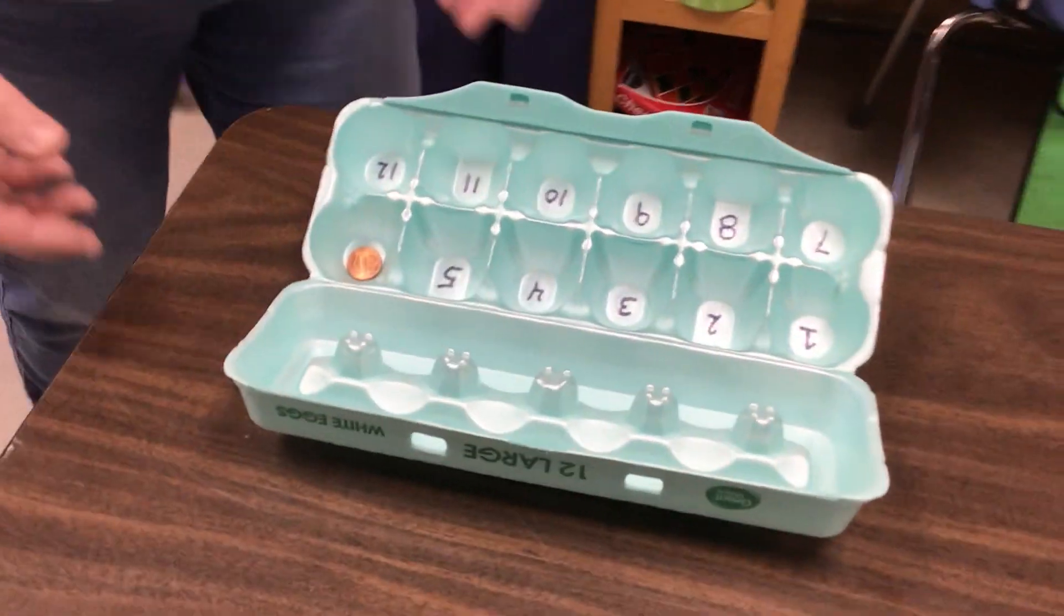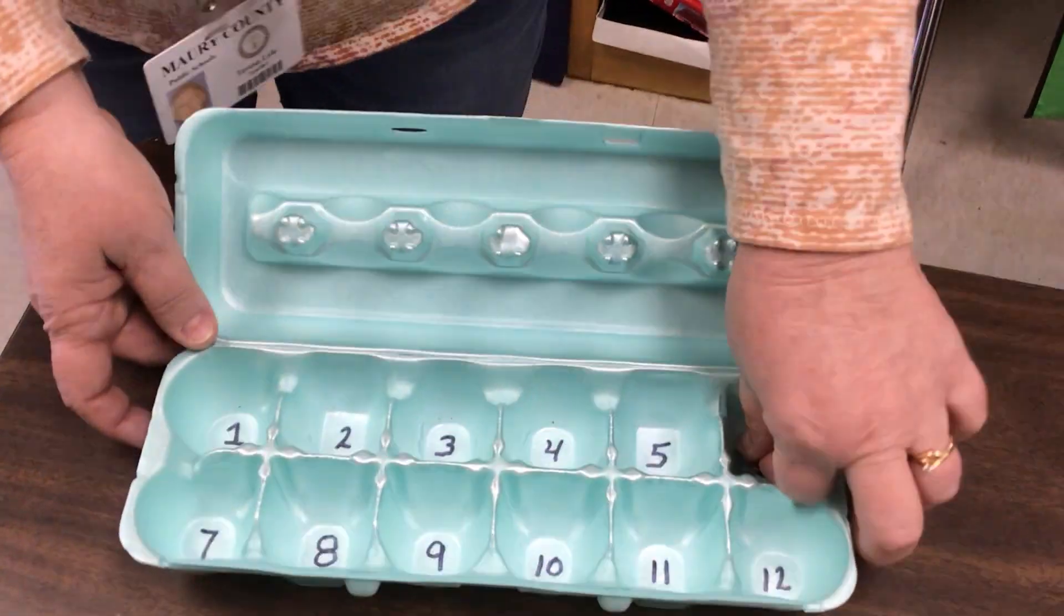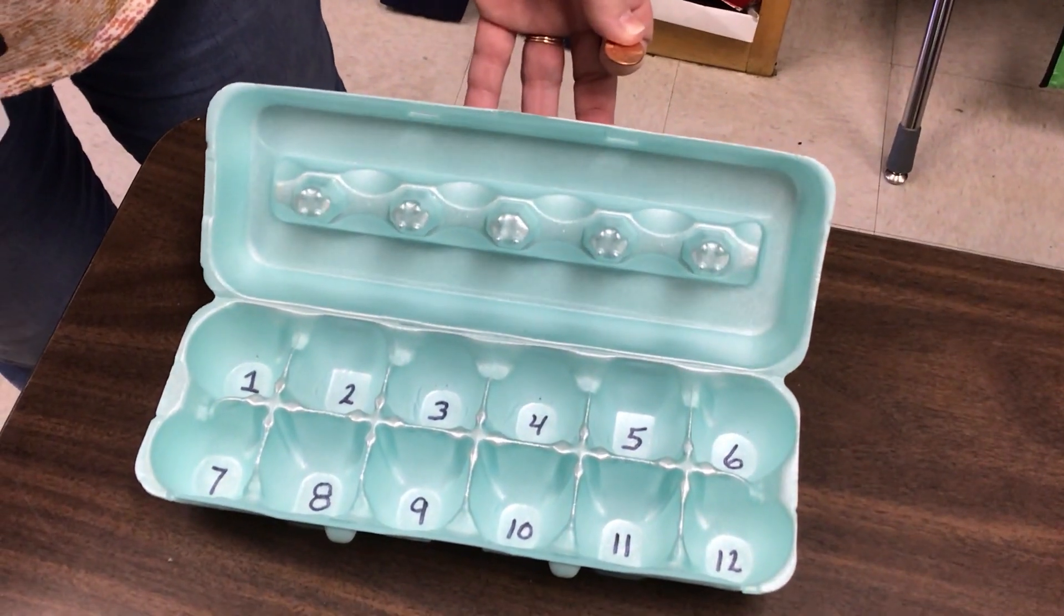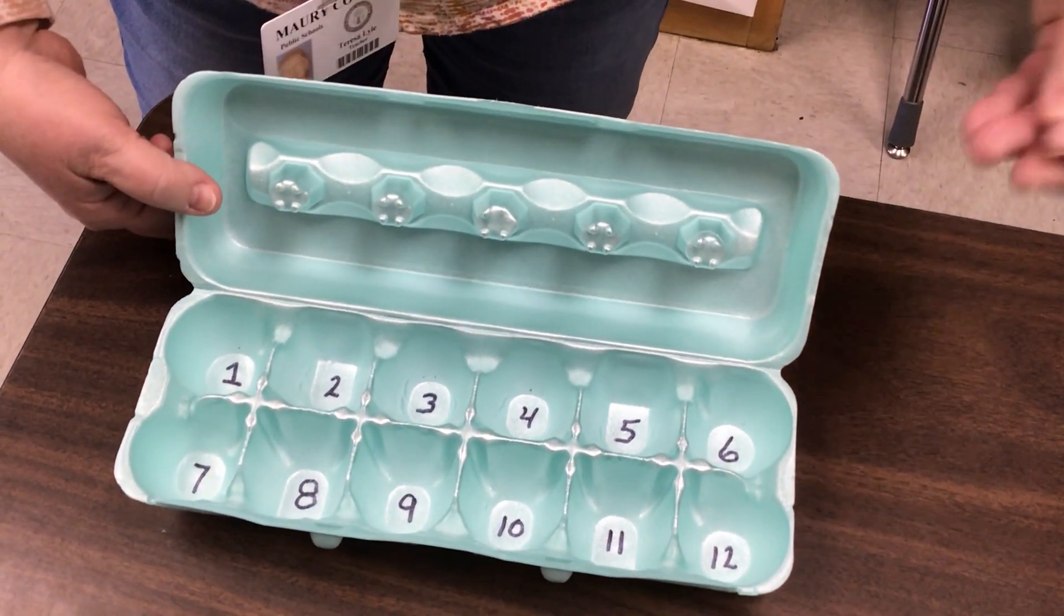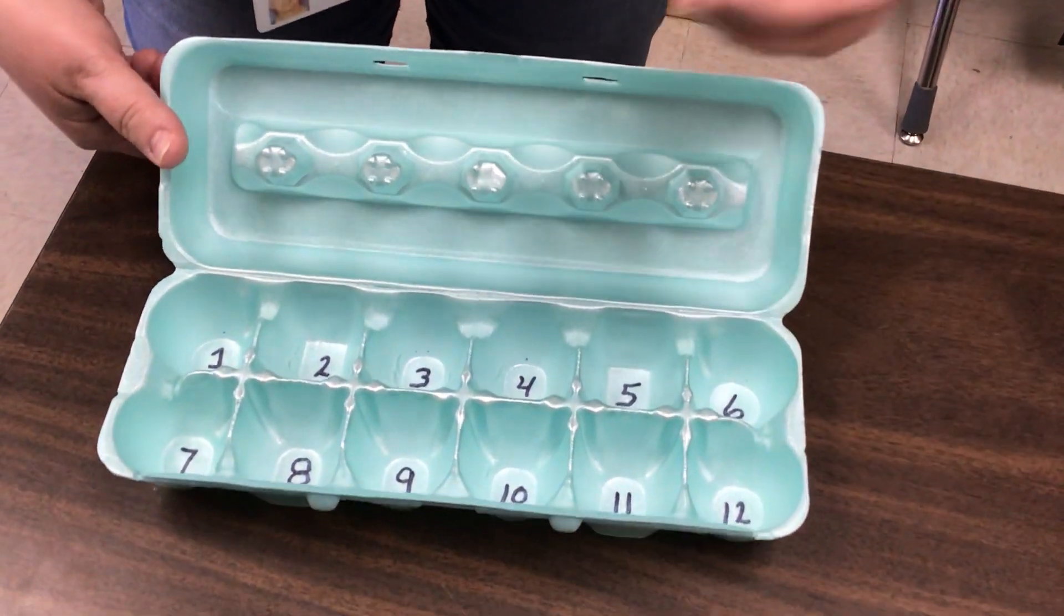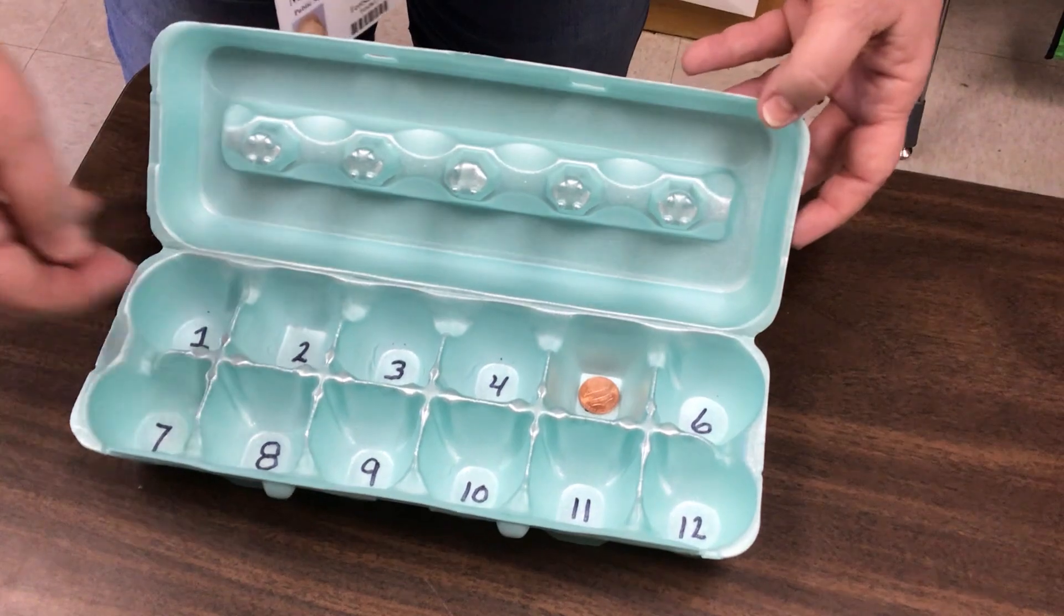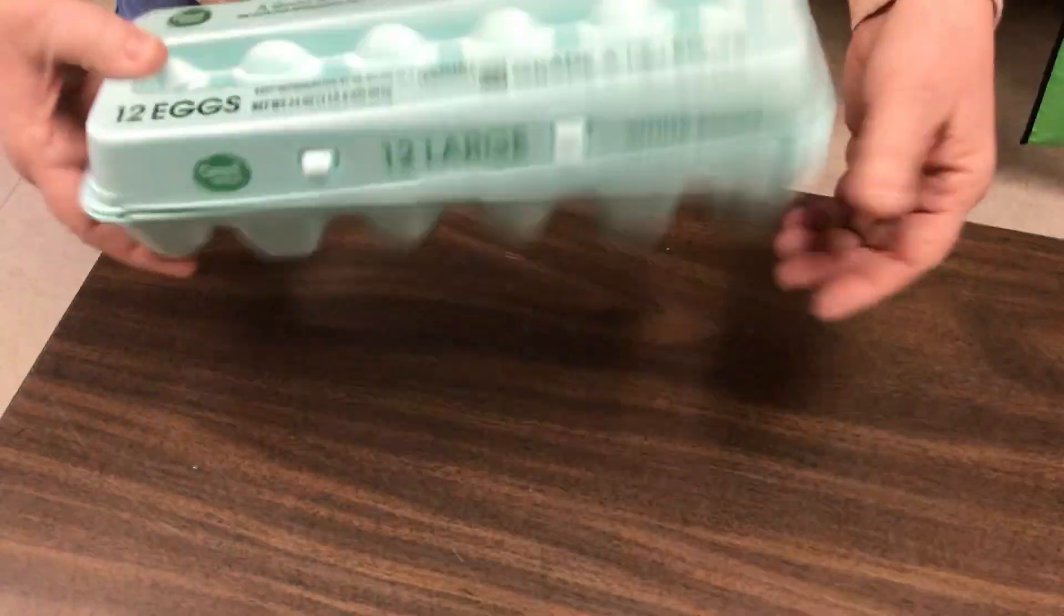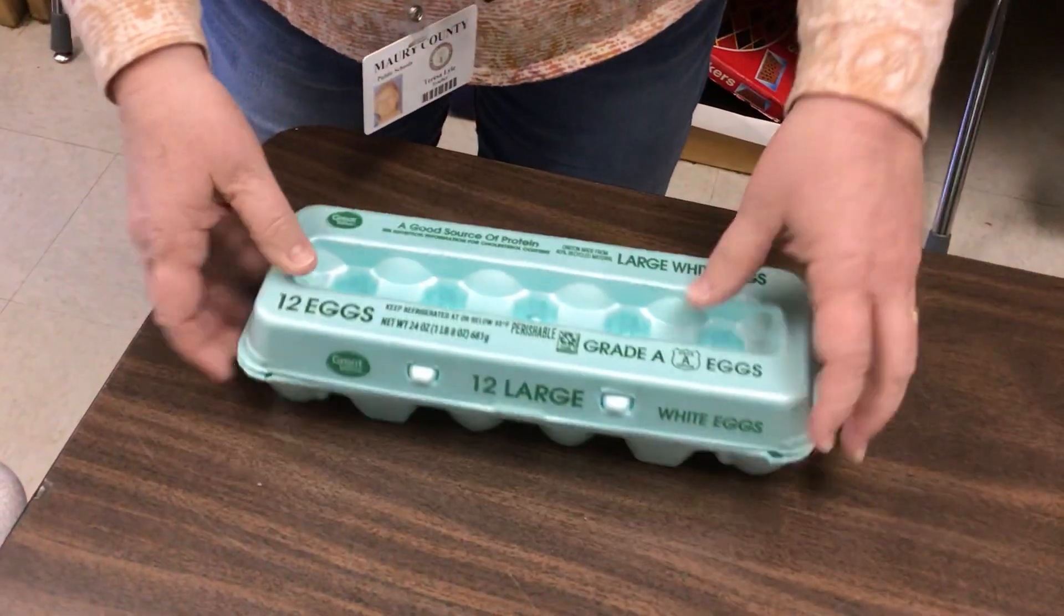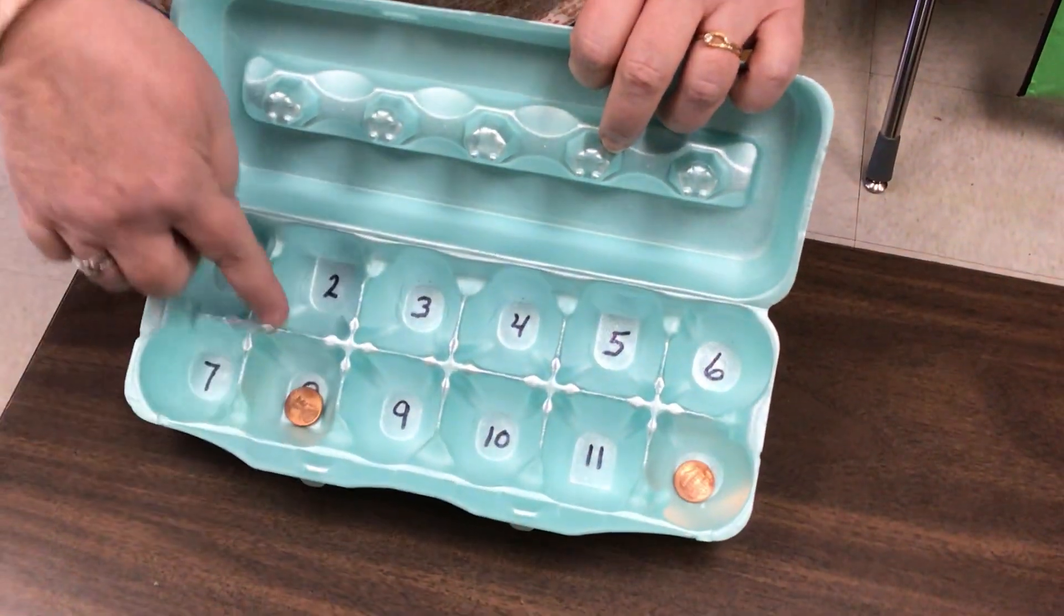Another activity would be if you have an egg carton, write your numbers in the bottom of the egg carton one through twelve. You can use cereal, you can use pennies, you can use just about anything. Drop two in, you're gonna close the top, shake it around.